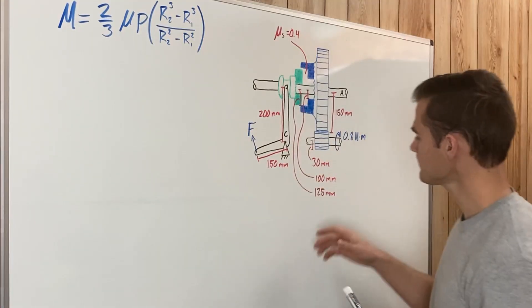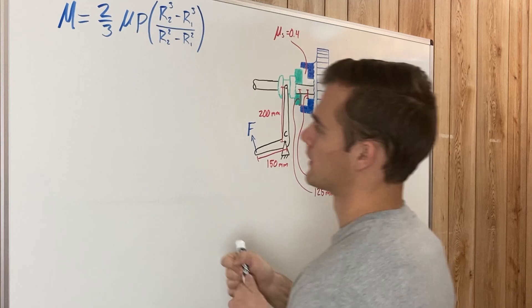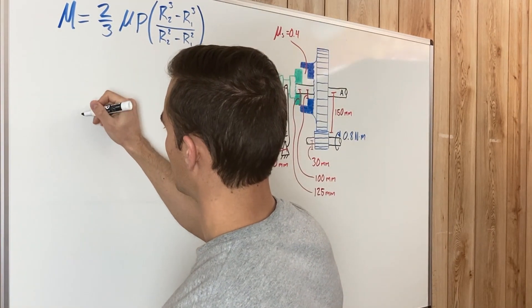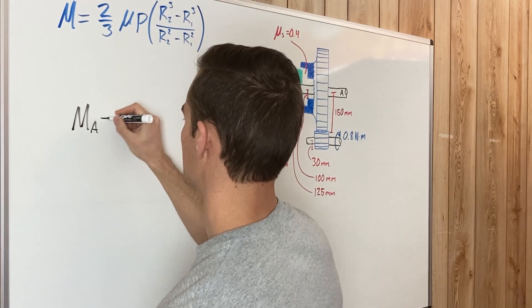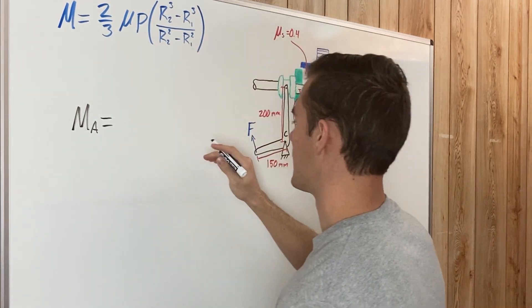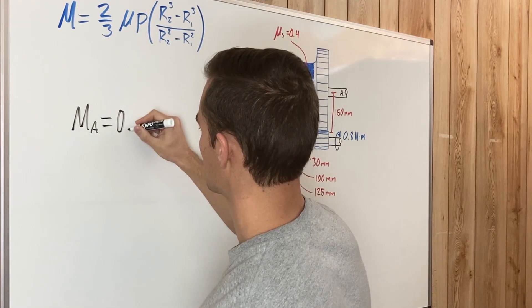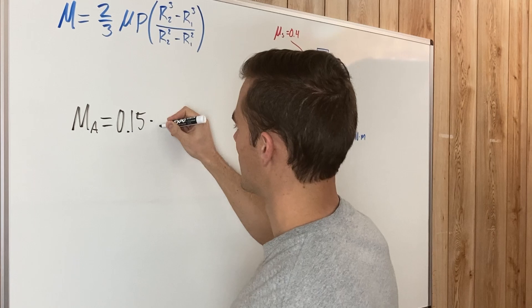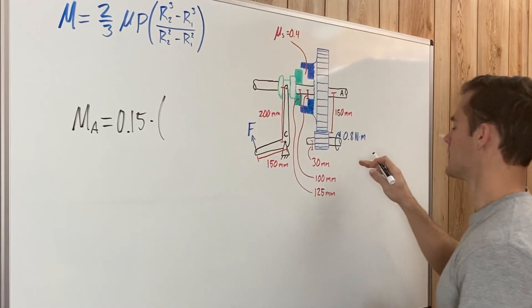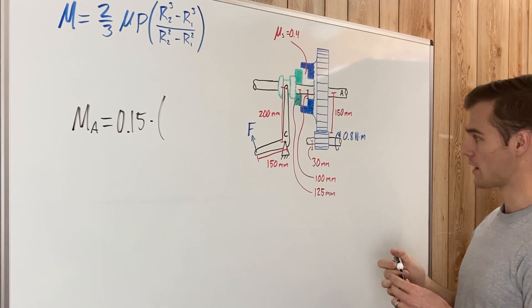Our moment about A is going to be a force times a distance. We have first our distance here of 150 millimeters, which is 0.15 meters, and then our force is what's applied right here at the connection of these two gears.